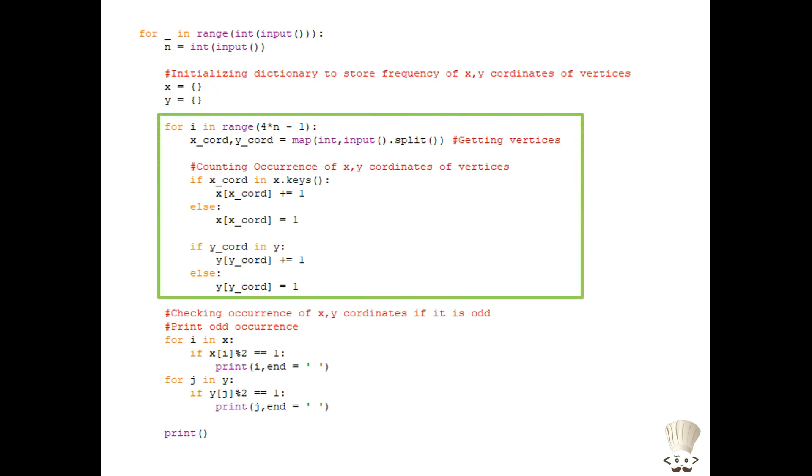Now this is the main part of this code which will count the occurrence of each coordinate. If the new value is found which is not there in dictionary then we will map it to 1. And if it is already there we will increase its value by 1. And this will run for total number of 4 times n minus 1 times, which are total known coordinates.